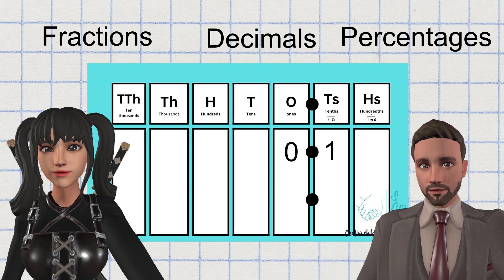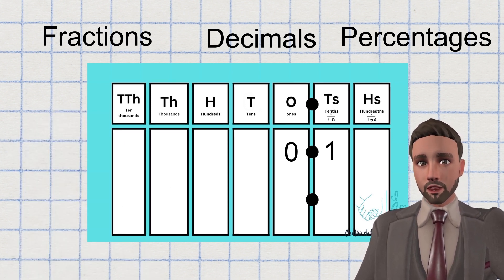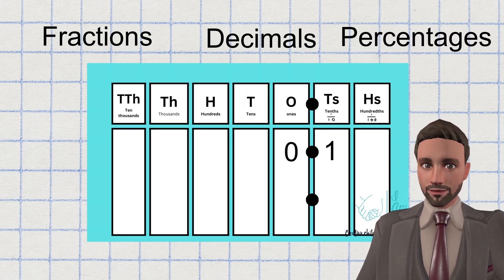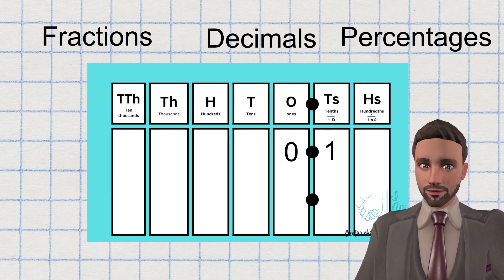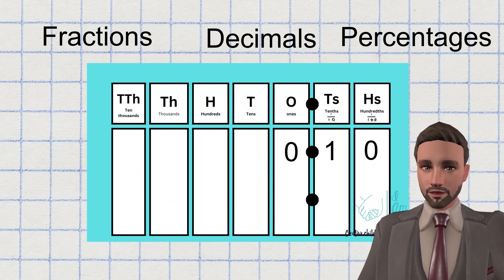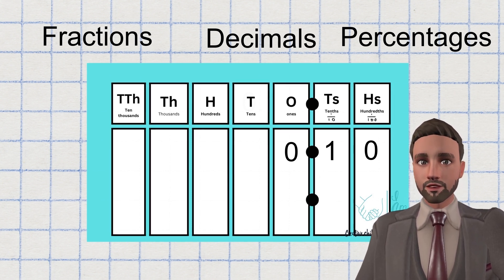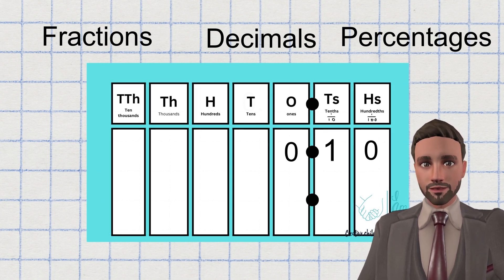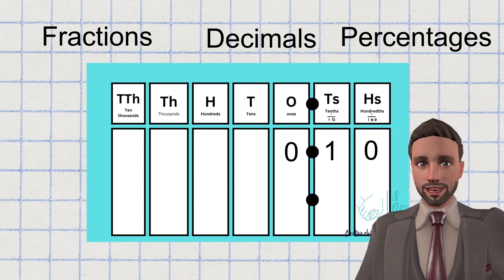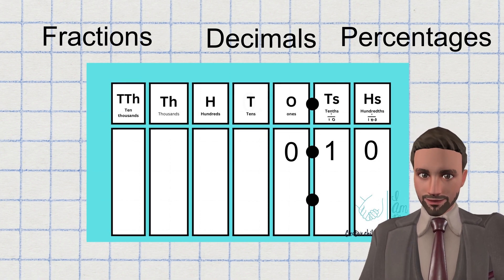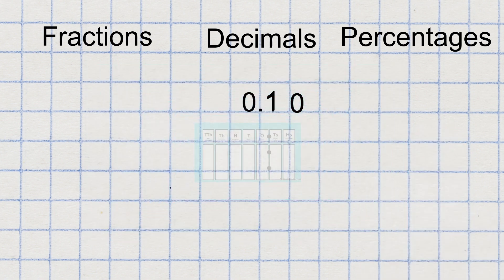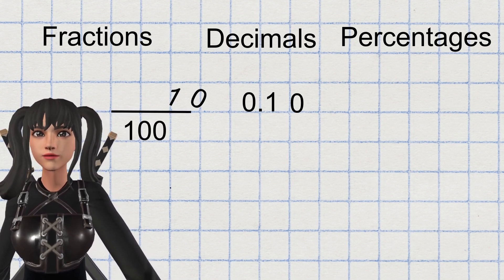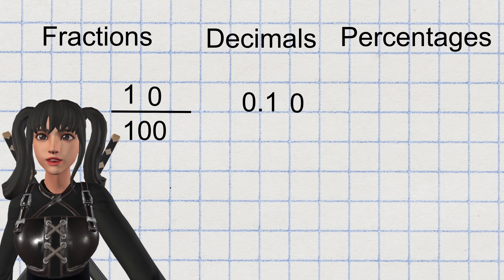However, what we can do is represent what is in the hundredths column. And as I said, nothing. Nothing can be represented with zero. Just like any column that has nothing in it, we could use and place a zero. Now it reads 0.10. And I'm sure you know how to do the rest. So now all I need to do is take those two digits and place them as my numerator over 100. And those two digits are also my percentage. Easy.